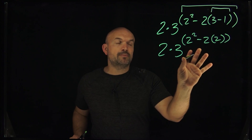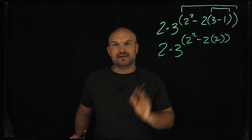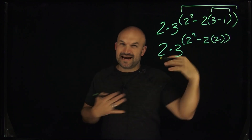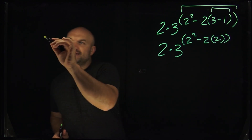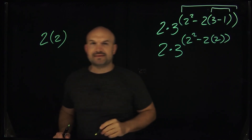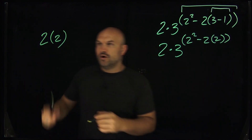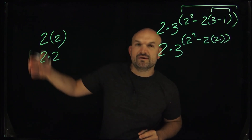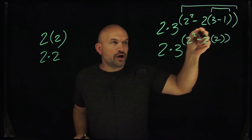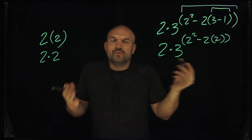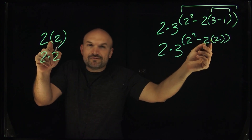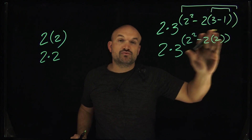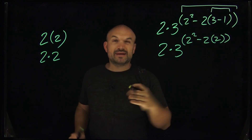You don't really need to write the second set of parentheses, but it helps with accounting. Two times two with parentheses and two times two without are equivalent expressions. There's nothing really to do inside those parentheses — you just have the number two — so I'm going to drop those parentheses and treat it as multiplication.